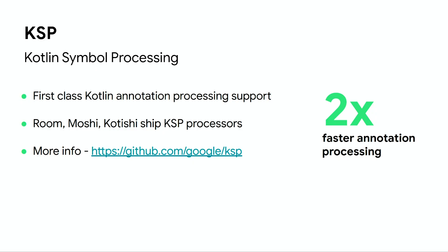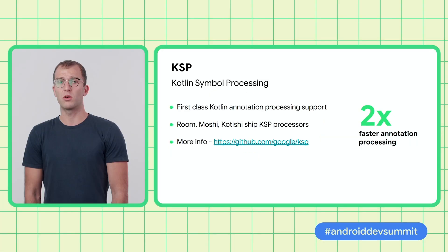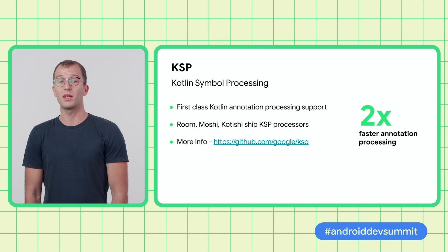Let's start with the performance improvements. Kotlin Symbol Processing brings first-class support for annotation processing for Kotlin, replacing KAPT. Using KSP benefits build speed as annotation processors can run up to two times faster compared to KAPT. There are already popular annotation processors that offer KSP-compatible versions, such as Room and Moshi, with more coming. If all of the annotation processors that you use support KSP, make sure to migrate from KAPT Gradle Plugin to KSP Gradle Plugin. To learn more, please visit this link.